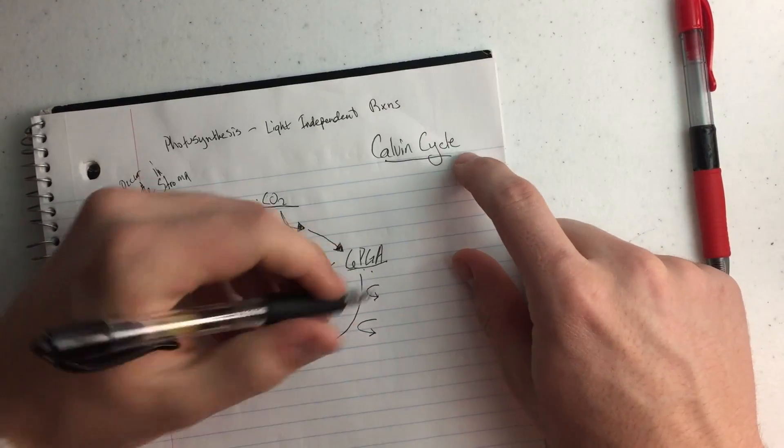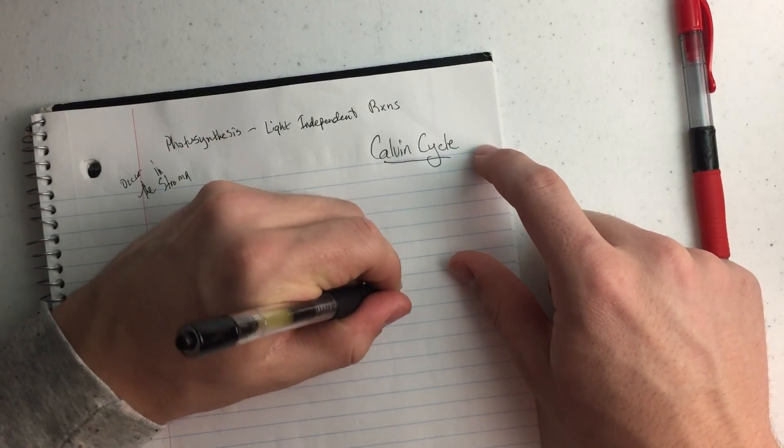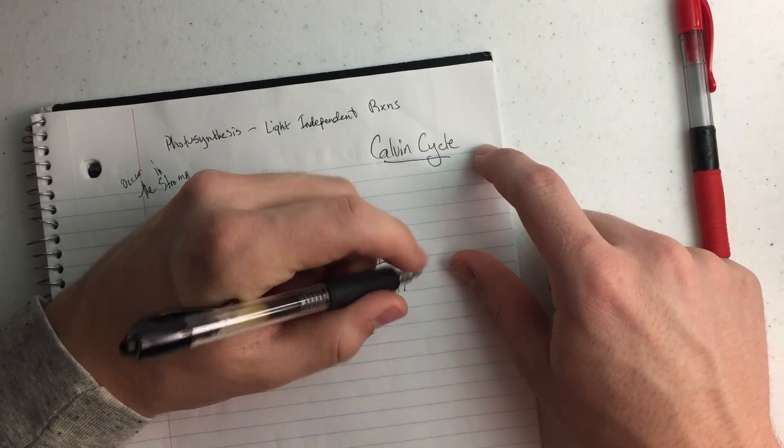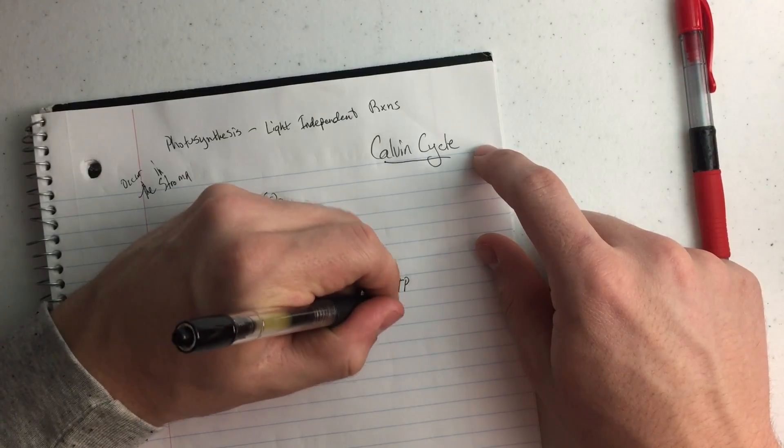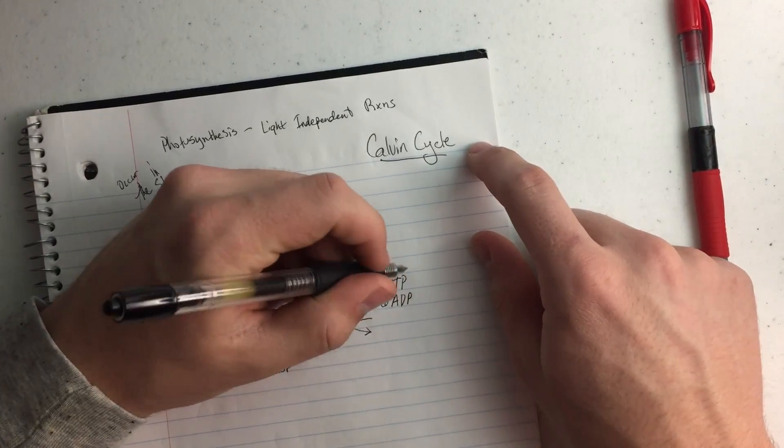But to get from PGA to PGAL, we're going to need to put in 6 ATP, and from that we're going to get out 6 ADP.